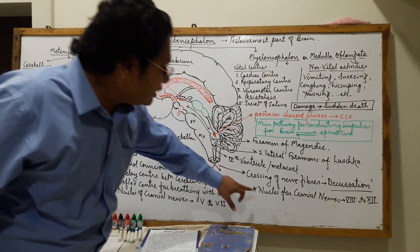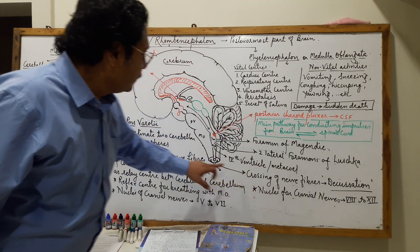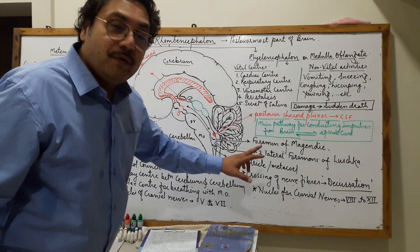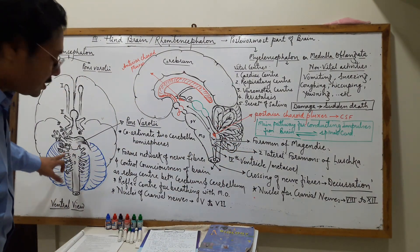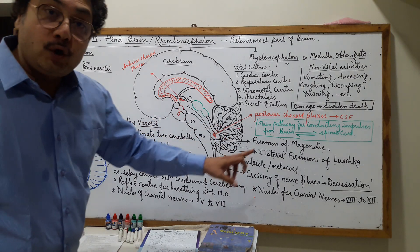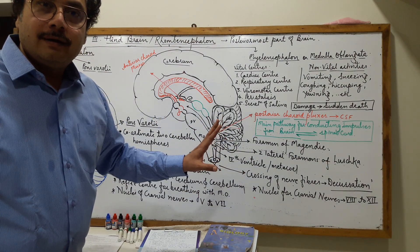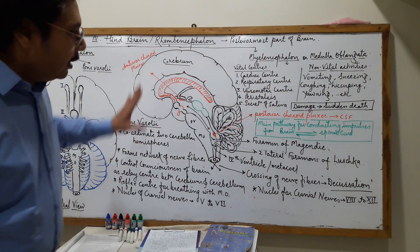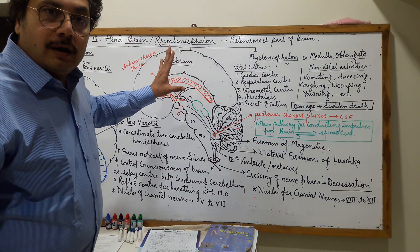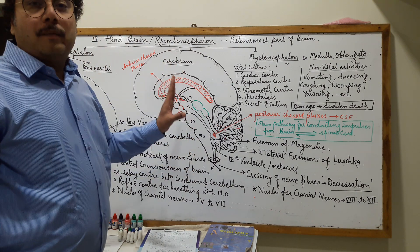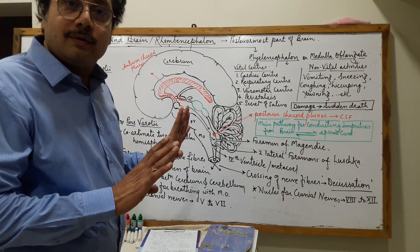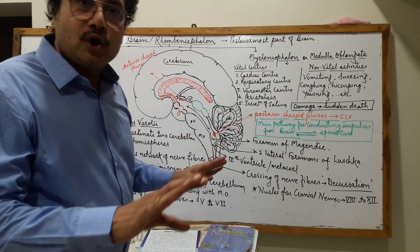The medulla oblongata also has centers or nuclei—bunches of cell bodies from which come out the cranial nerves numbered 8 to 12. These come out from the medulla oblongata. This covers the entire functions of the medulla oblongata. You have to concentrate more on these functions. Now, to the completion of the brain structure.